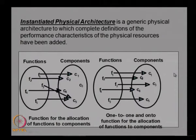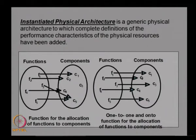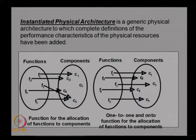To get the instantiated physical architecture — which adds complete definitions of the performance characteristics of the physical resources — we take the generic physical architecture and add the names of the actual components to each element. This gives the instantiated physical architecture. This can be done by mapping functions to components and checking whether the components actually satisfy those functions.